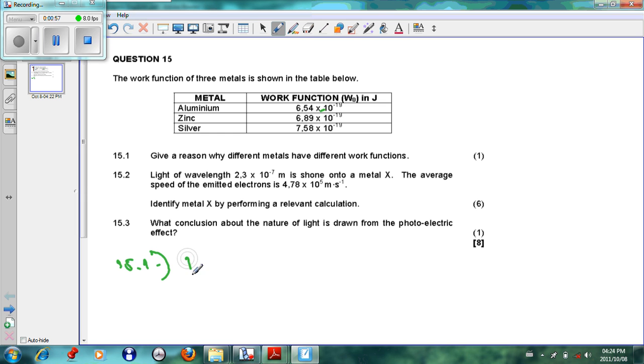Or the force of attraction between the electron and proton of each metal is different. So silver has a higher work function, that means that the electrons are more strongly bonded to the protons than for example in aluminium. So more energy will be required to take out the electron or remove the electron or pull it away from the proton.